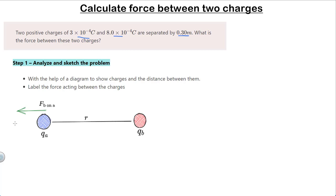From this diagram, we can clearly see that we have two charges, one is QA and another is QB. These two charges are kept at a distance R apart, and this force F is the force on charge QA due to charge QB.